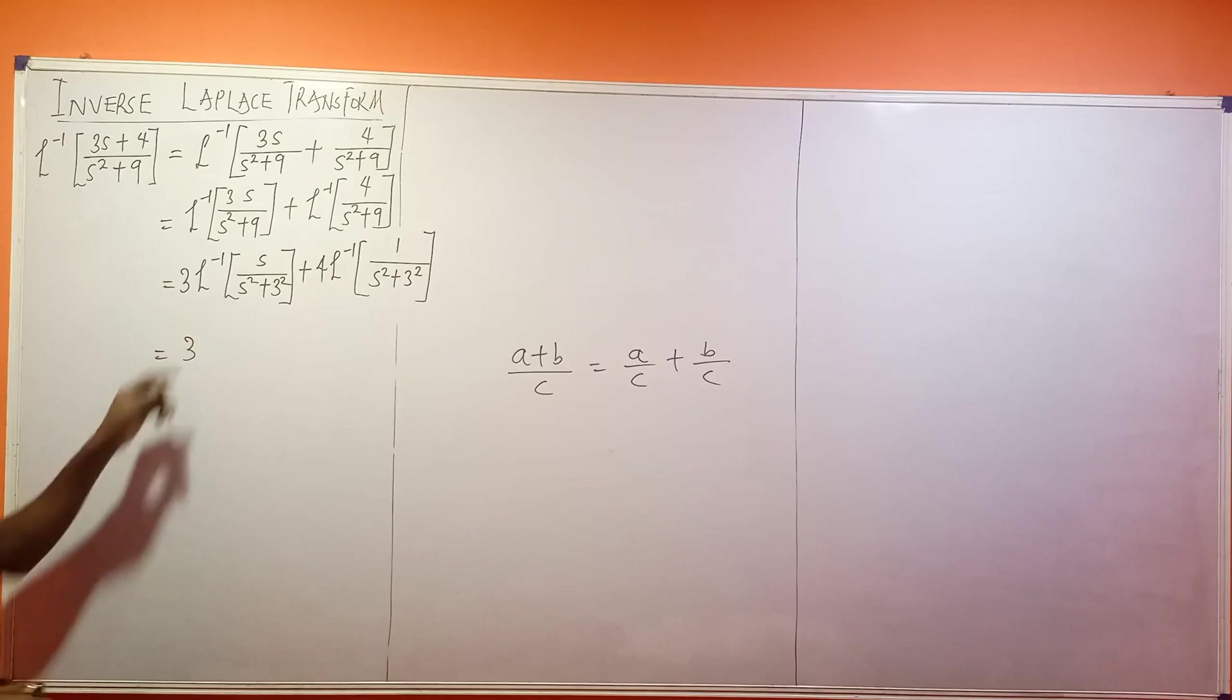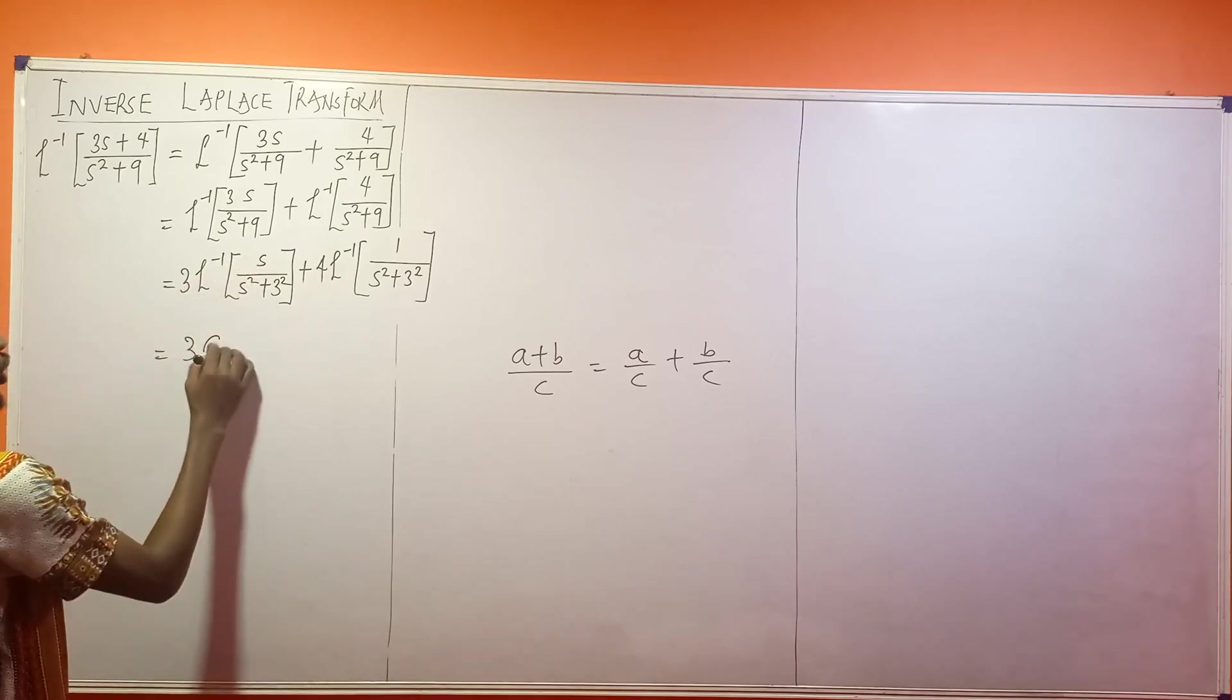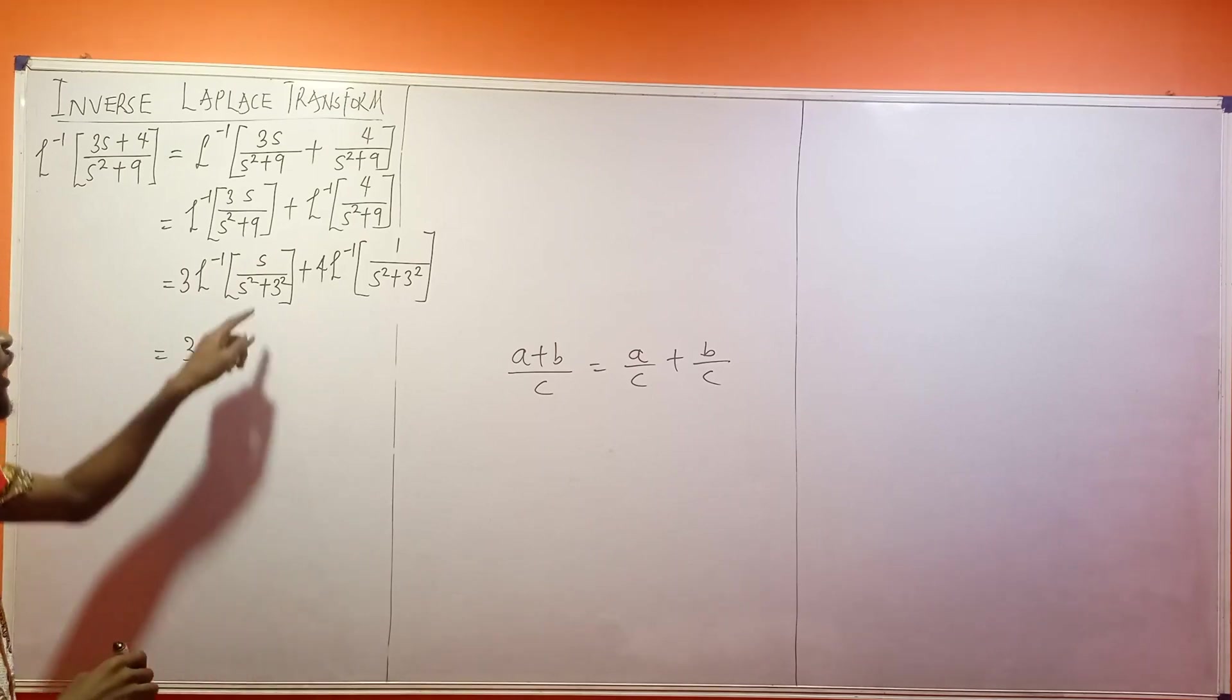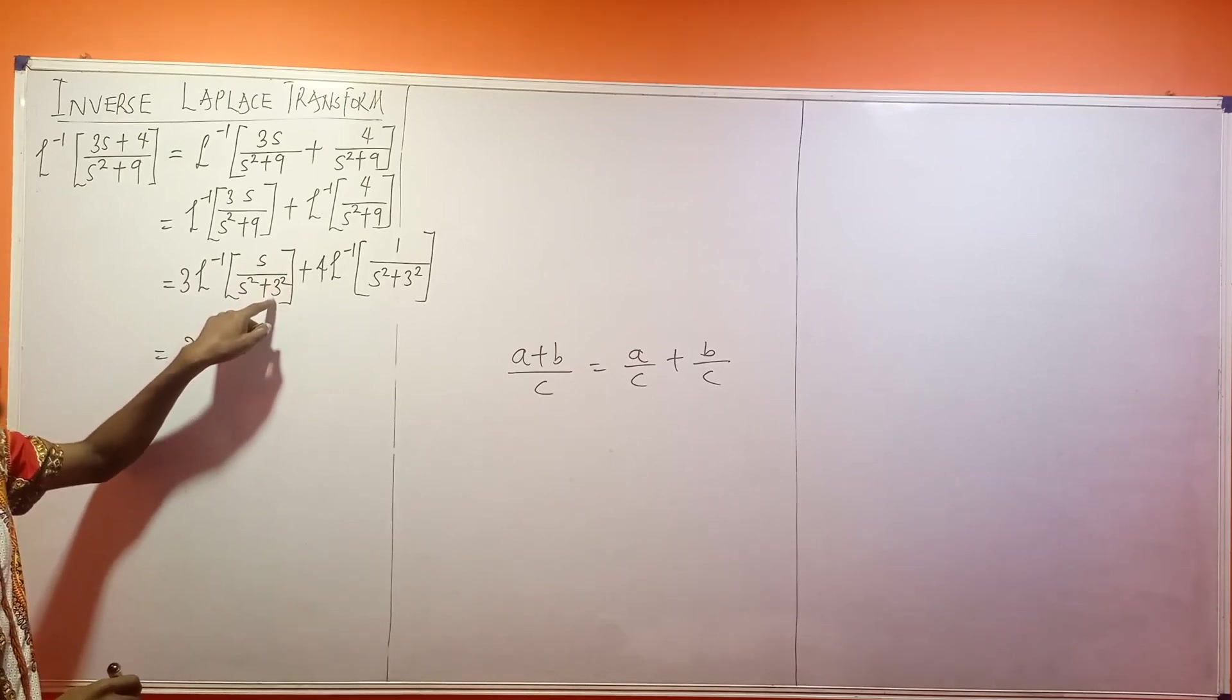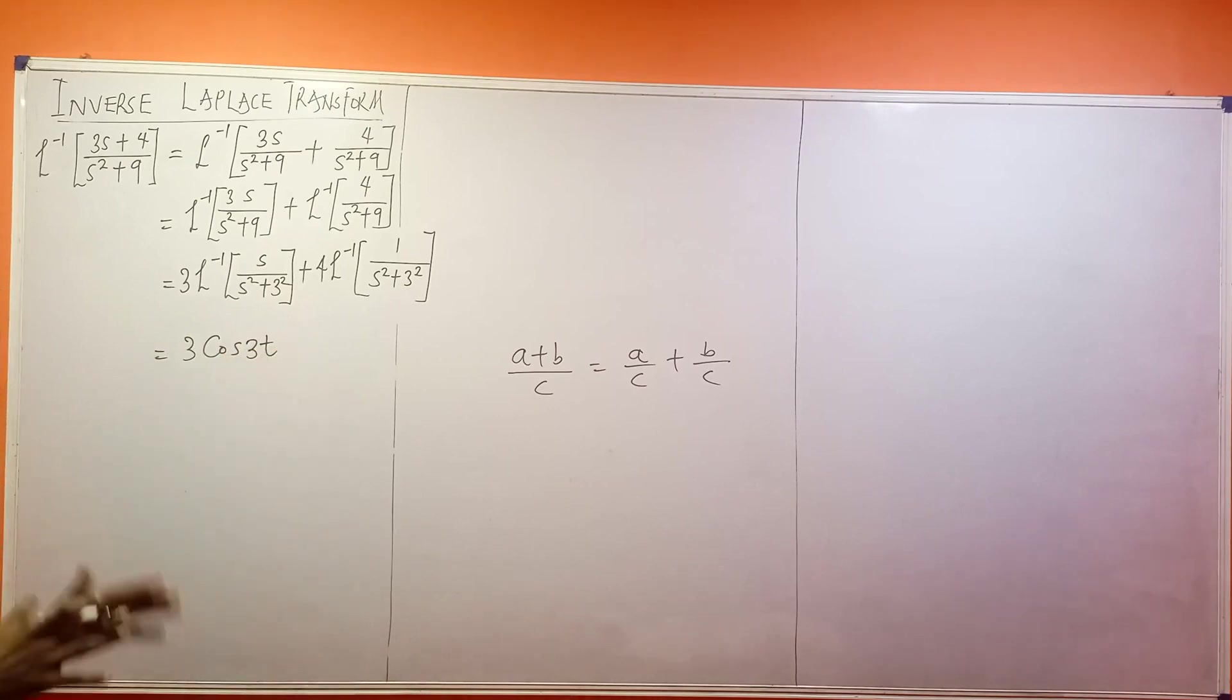Now this is 3, s. Whenever you have s on top, we are talking about cos. Now this 3 squared signifies that my a is what? 3. So this is cos 3t. That's cos 3t. Plus.